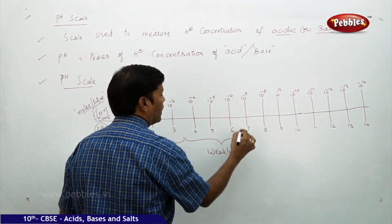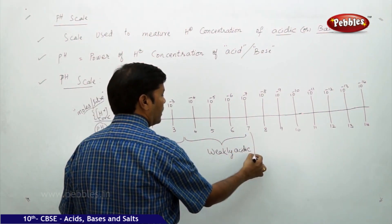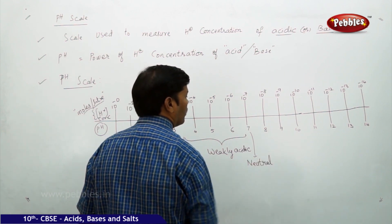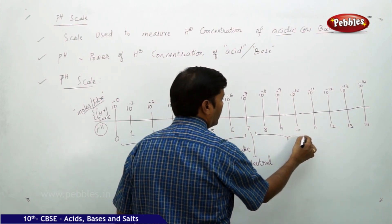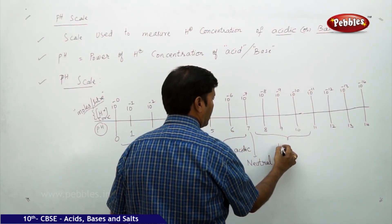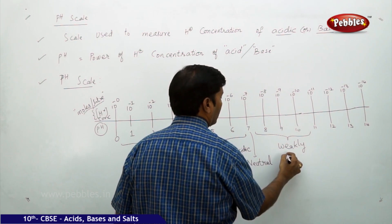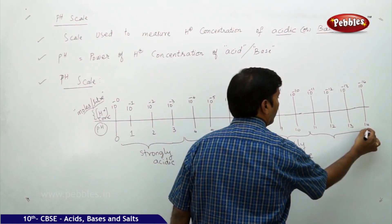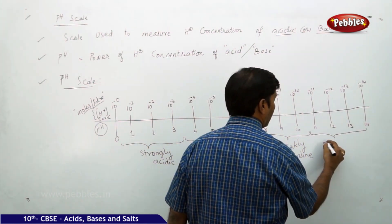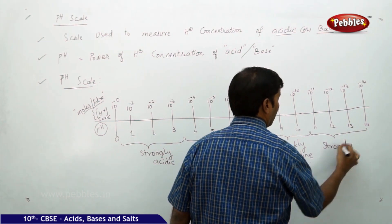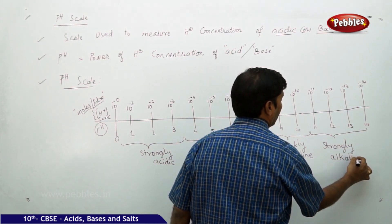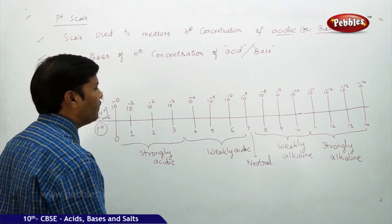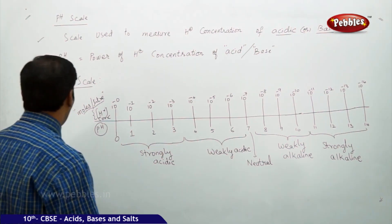At pH 7, the solution is neutral. From pH 7.1 to around 10.5, it is weakly alkaline. From pH 10.5 to 14.0, it is strongly alkaline.